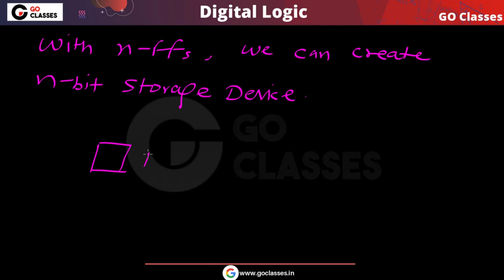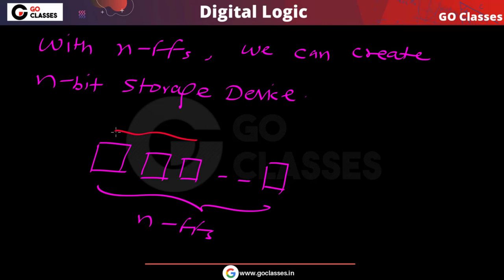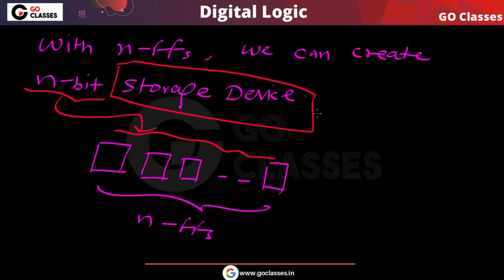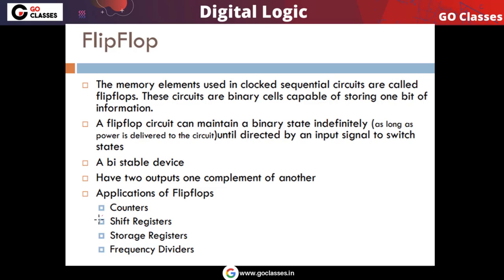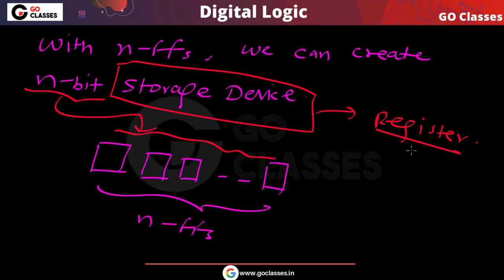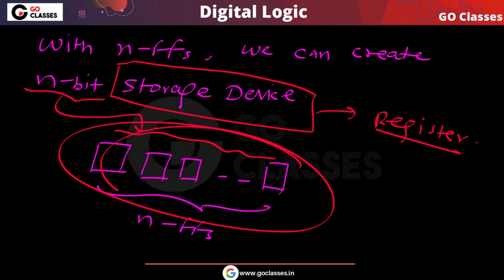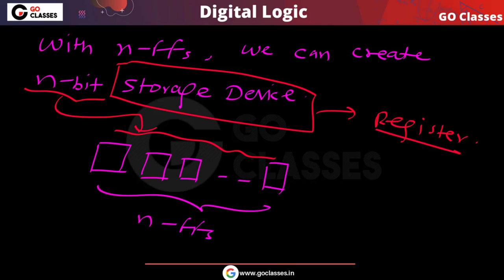If we take n flip-flops — each storing one bit — we can store n bits total. This type of storage device we call a register. A register is basically an n-bit storage device, like a 4-bit register, 8-bit register, or 16-bit register. This is the first application of flip-flops that we will study.